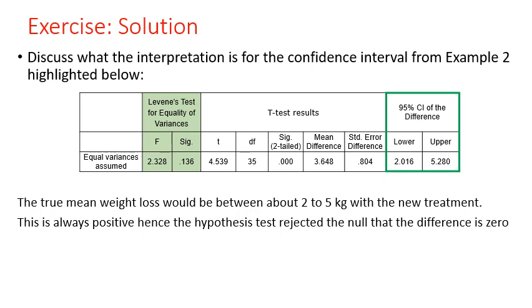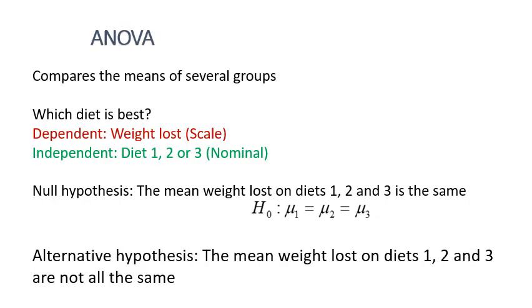If we are comparing means of several groups, the t-test is only applicable for 2 groups. If we go beyond 2 groups, it is wrong to run multiple pairwise t-tests. Instead, we use analysis of variance — one-way ANOVA — which is used when comparing the means of several groups.